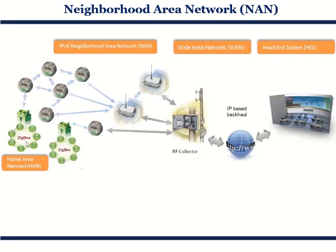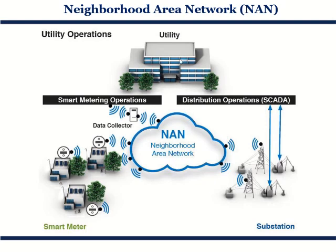As depicted here, a NAN shows a head-end system connected through the internet via an RF collector. The RF signals are connected towards home internet gateways, representing a large number of users. This is a simple example where the collected data is of huge volume because the number of users is very large. This is the bridge point where utility and consumers are connected — on one side is the utility, on the other side is the customer — and NAN plays an important role, with smart operations creating a system between them.